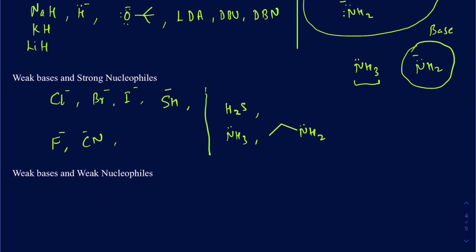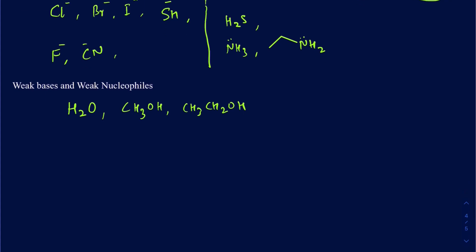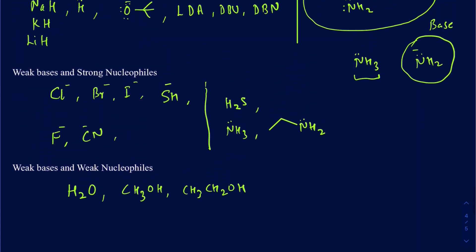Some common examples of weak bases and weak nucleophiles are going to be H₂O and any alcohol, like methanol or ethanol. Those are your weak bases and also your weak nucleophiles. When it comes to whether they act as a base or a nucleophile, temperature plays a role — if you're doing a reaction at elevated temperature, they act more like bases, but at room temperature they act more like nucleophiles, corresponding to a comparison between the SN1 and E1 mechanisms.